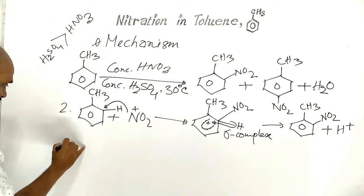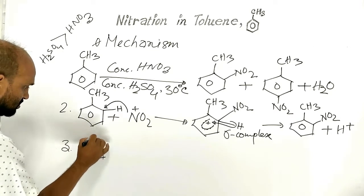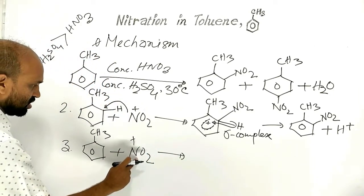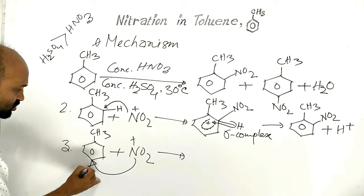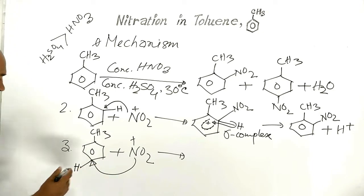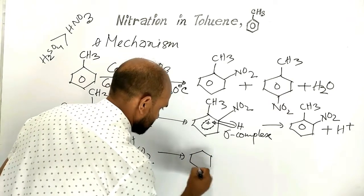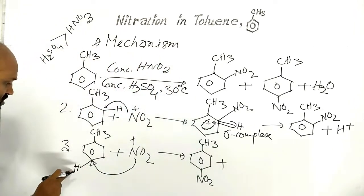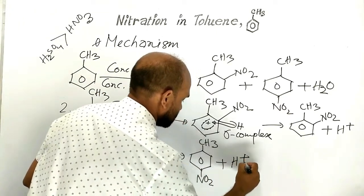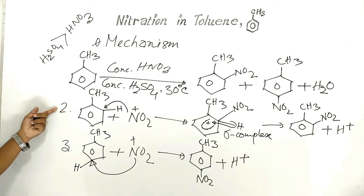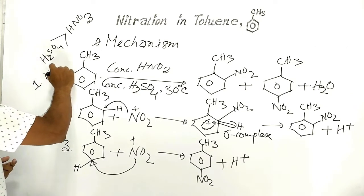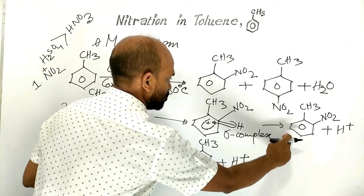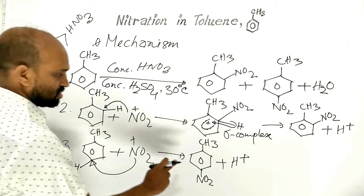Likewise, step three: this time, the nitronium ion combines with the para position where hydrogen is present, giving a methyl group and a nitro group on the ring. The hydrogen is freed as a proton, just like in step two. So step one produces nitronium ion, step two produces ortho-nitrotoluene, and step three forms para-nitrotoluene.